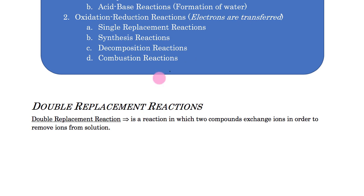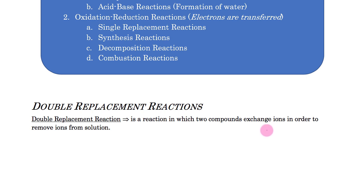Our first type, the double replacement reaction, is when we take two compounds and they exchange ions in order to remove the ions from the solution. I don't like the name double replacement reaction — it's very misleading. It makes you think that the ions are literally exchanging, and that's not really what's going on. We'll look at the reactions step by step and at the end I'll explain why they use this name.